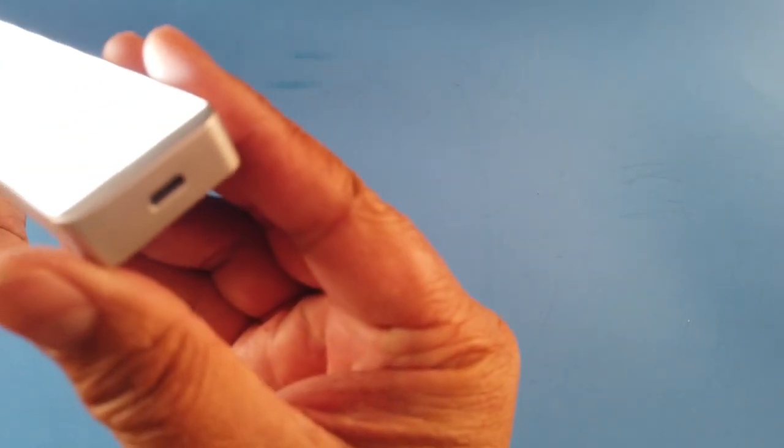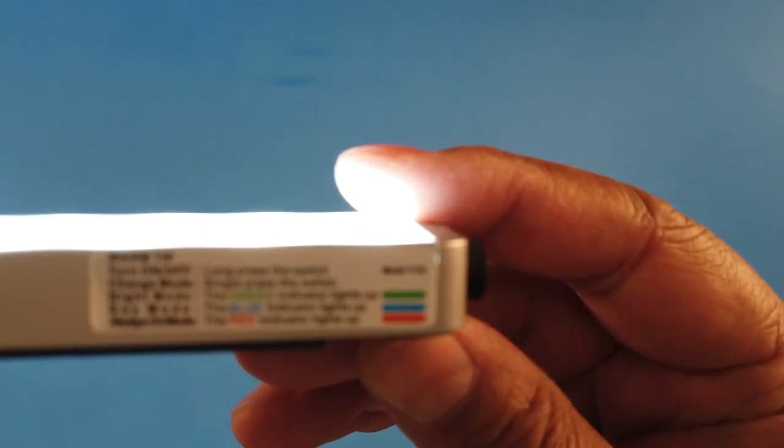On this end right there is the micro USB charging port and that's all there is to this. It tells you right here what each color means.